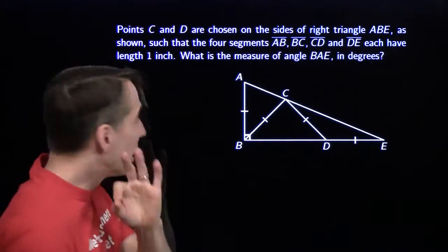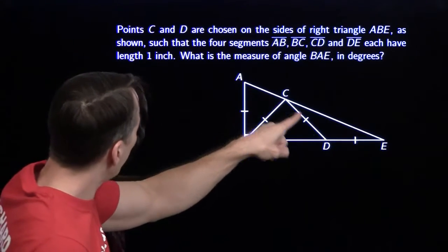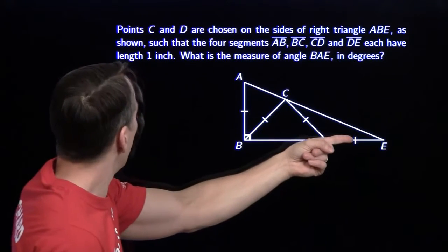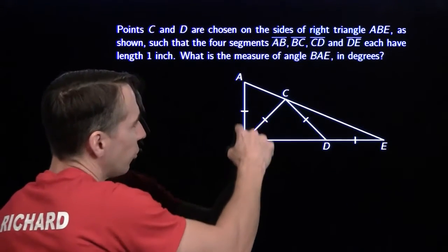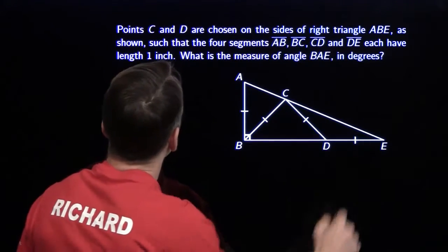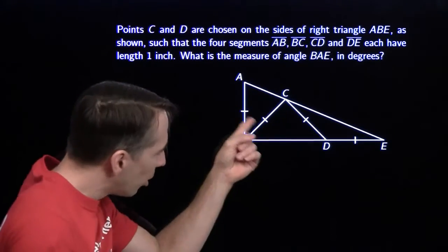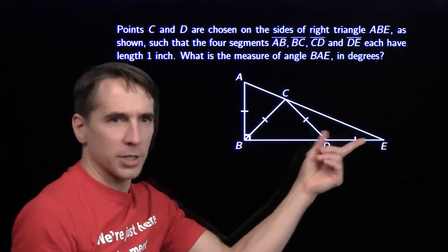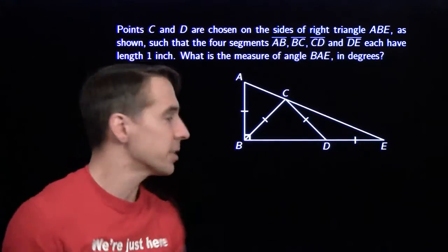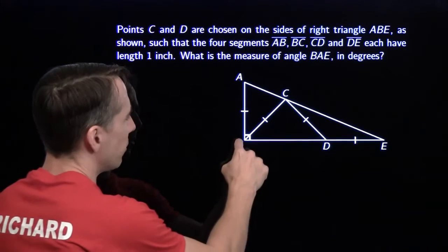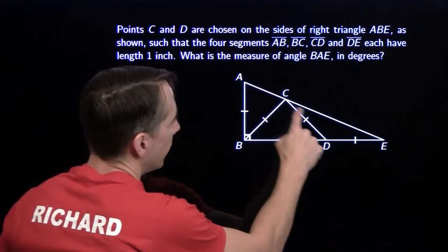All right. Well, here they gave us the diagram. That's awfully convenient. The points C and D on the sides of a right triangle have another right triangle here, A, B, E. Such that these four segments each have length 1 inch. So they're all the same length. We've got them all conveniently marked in the diagram for us. If they hadn't done that, that should have been the first thing you do is mark everything. So you know what's equal, and we're looking for the measure of this angle, B, A, E.